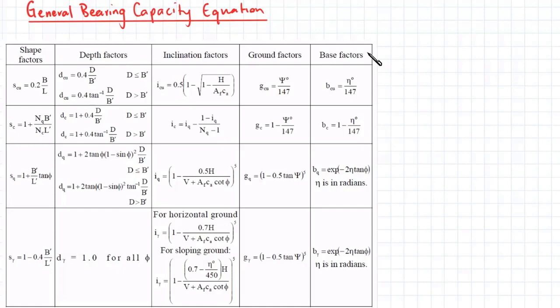Note that if you have a question where the shape factors and inclination factors are both applicable, you cannot apply them both together in Hansen's equation. You need to consider them as two separate cases and take the smaller value of the two.